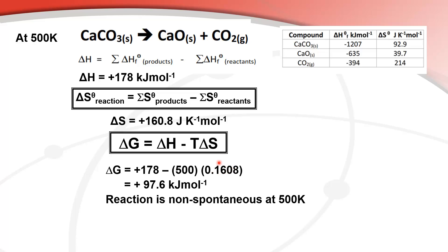Putting in positive 178 for the change in enthalpy, minus 500 for the temperature in Kelvin, multiplied by the change in entropy in kilojoules, the value obtained is positive 97.6 kJ/mol. This is a positive value for delta G. Since delta G must be negative for a spontaneous reaction, the reaction is non-spontaneous at 500 K.